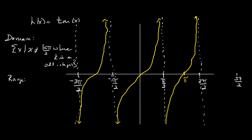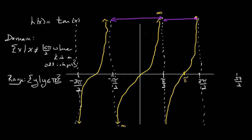The range of tangent is all real numbers — y such that y exists as all real numbers. The graph repeats itself from −π/2 to π/2, so its period is π/2 + π/2 = π. Tangent has a period that is half that of sine and cosine, and its domain and range are very different from the two prior functions.